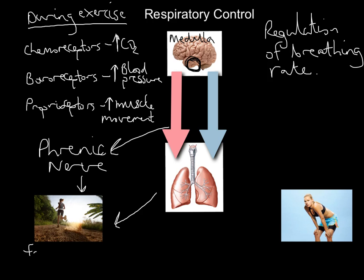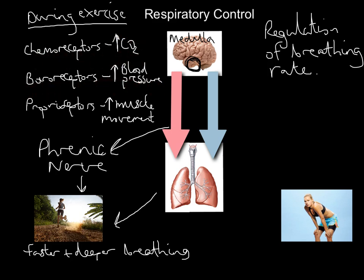The result is faster and deeper breathing. So for a three-or-four mark question on this topic, the marks come from: chemoreceptors detect an increase in CO2, baroreceptors detect an increase in blood pressure, proprioceptors detect an increase in muscle movement, this information is passed to the medulla, the medulla sends an impulse down the phrenic nerve into the diaphragm and intercostals, and that results in faster and deeper breathing.